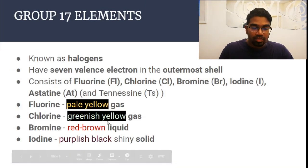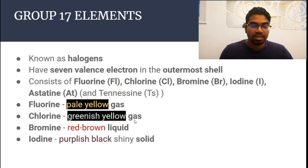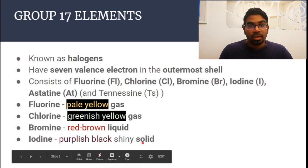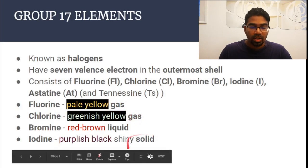They all have a signature color. Fluorine is a pale yellow gas, chlorine is a greenish-yellow gas, bromine is a reddish-brown liquid, and iodine is a purplish-black shiny solid. You can notice a trend going down the group — the physical state changes from gas to liquid to solid.